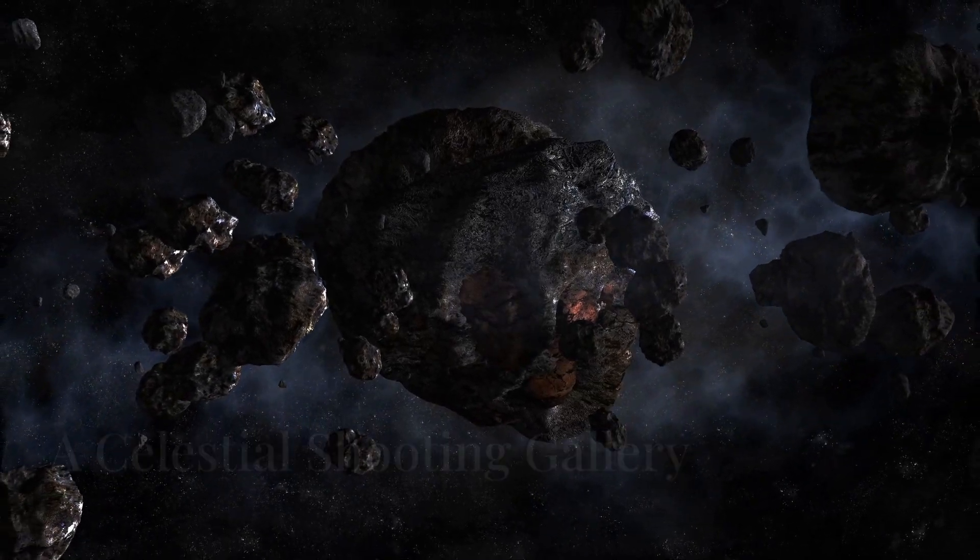Space might seem empty, but it's a celestial shooting gallery, with countless meteors and space dust hurtling through the cosmos. Every second, hundreds of tiny meteors enter Earth's atmosphere, burning up and creating those fleeting streaks of light we call shooting stars.